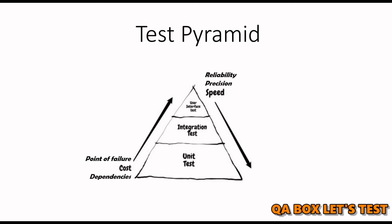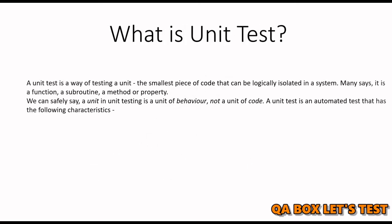So it is important we write good unit test cases. What is a unit? We have to break it down into two parts: unit and test. In a test, we write assertions — we check that the expected result matches the actual result. A unit is the smallest piece of code that can be logically isolated in a system. Many say it is a function, a subroutine, a method, or a property. However, I feel we can safely say a unit in unit testing is a unit of behavior, not a unit of code.